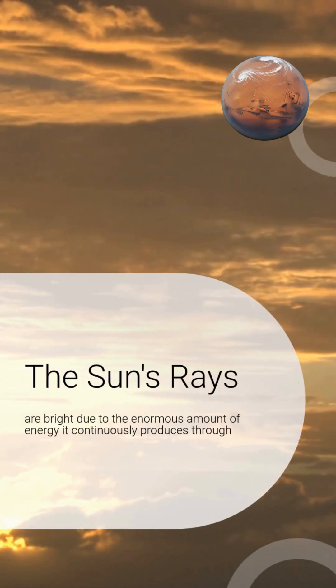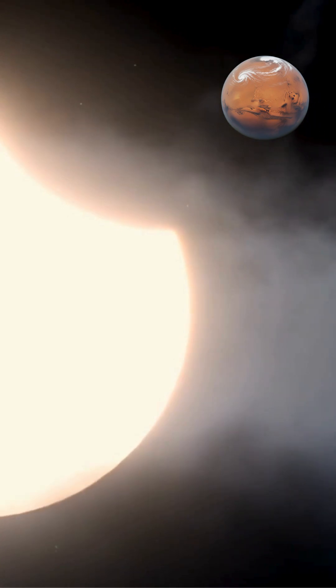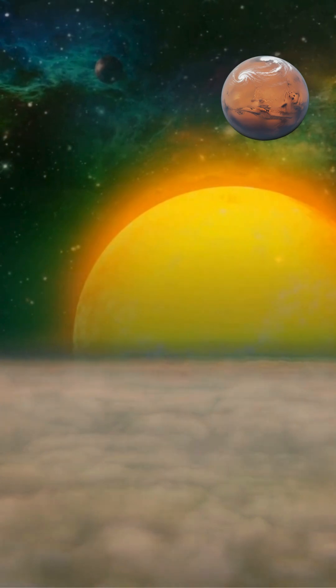The sun's rays appear bright because of the enormous amount of energy it continuously produces through nuclear fusion. This fundamental process transforms the sun into the most powerful energy source in our solar system, illuminating everything within billions of miles.